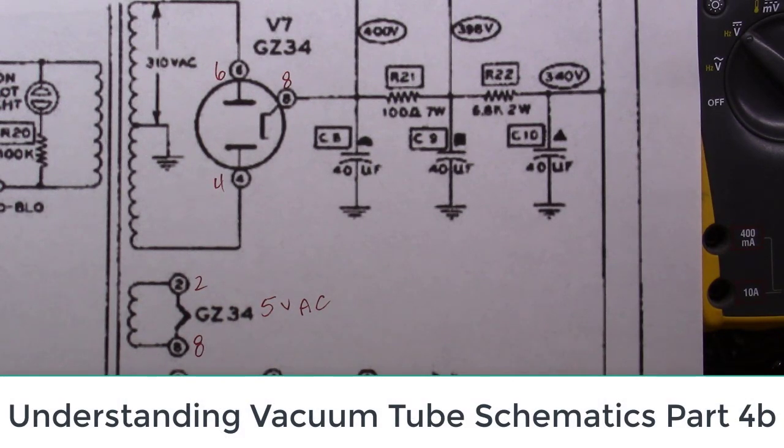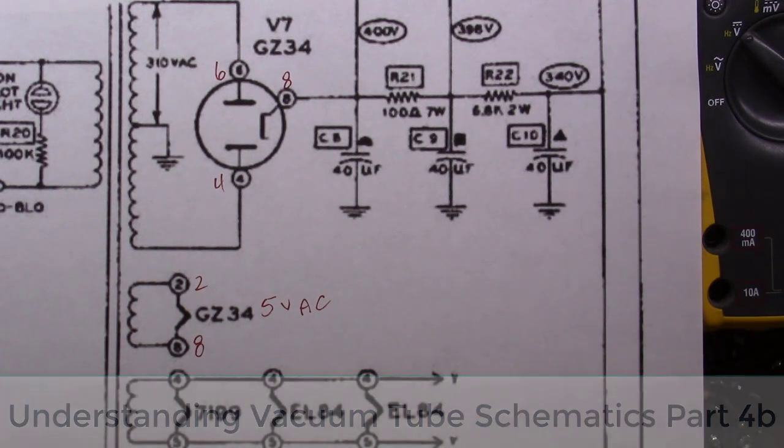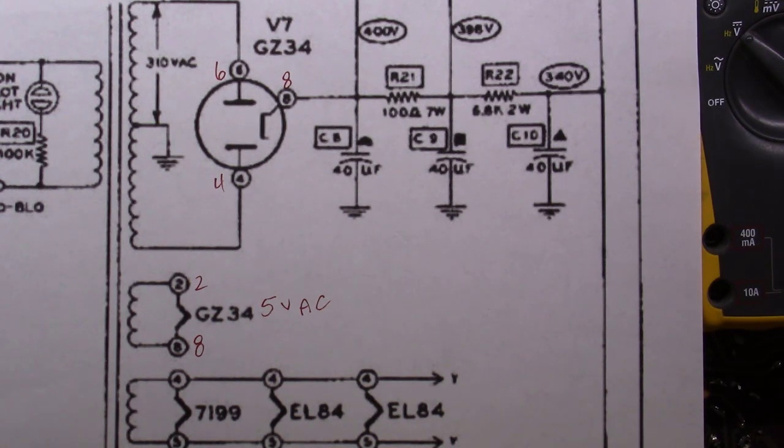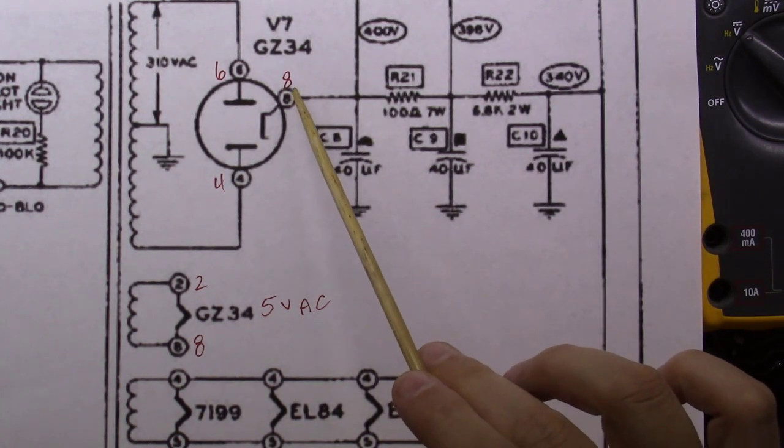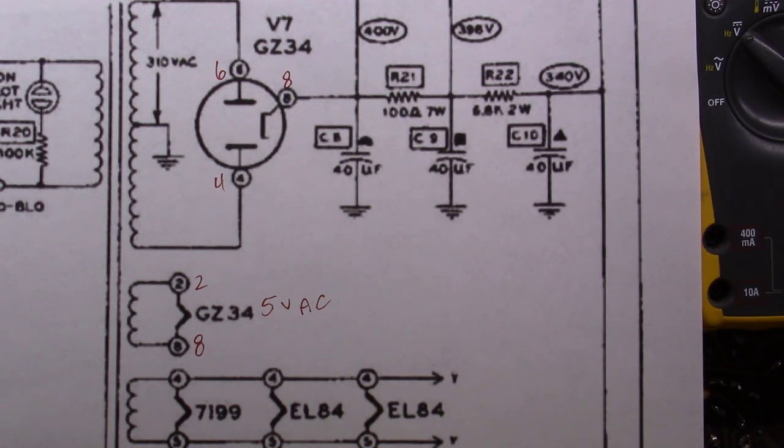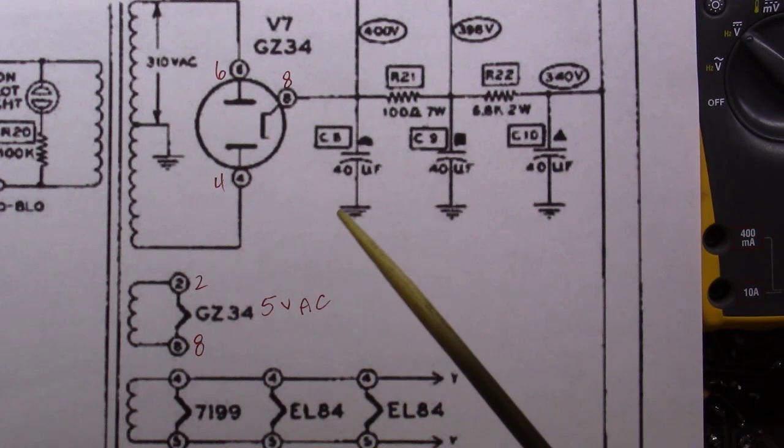Hey, welcome back everybody. We're going to call this Understanding Vacuum Tube Amplifier Schematics Part 4b. The reason I'm calling it that is I got some questions on my Part 4 video about how can AC and DC exist on the same point of a circuit. I thought the questions were actually pretty good. I probably should have answered it this way in the original video, so this is just a supplemental video to help clear up the questions.